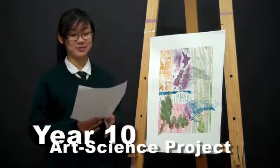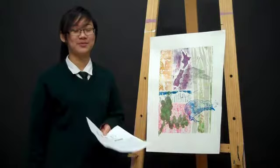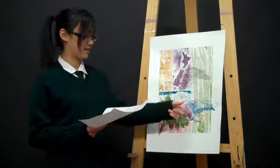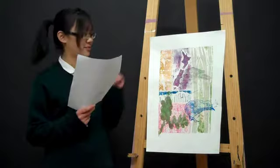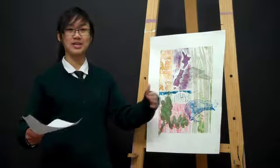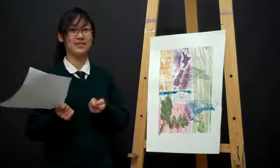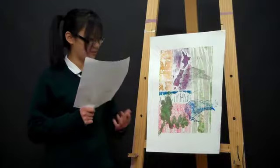New things that I learned for this unit would be different ways of printing, like monoprinting, which I did for the Kiwi, intaglio, which is for my kakapo, colograph, which is what we did for our backgrounds, where we put things on an A3-size sheet of paper and printed it through the printing press, and woodblock, which we carved out on wood. That's what I did for my beech branch.